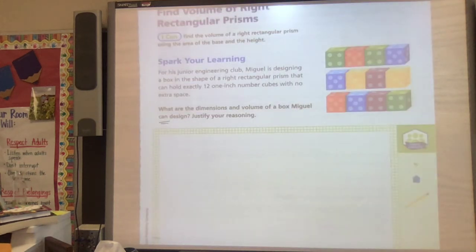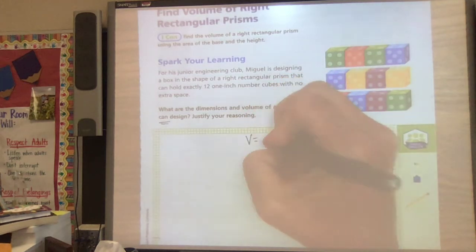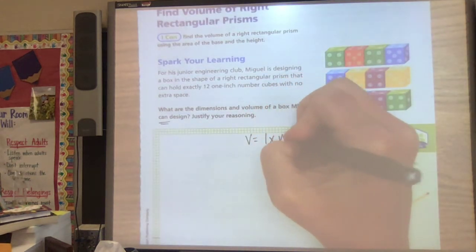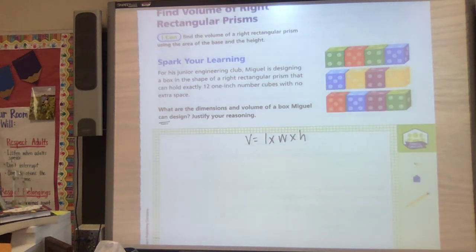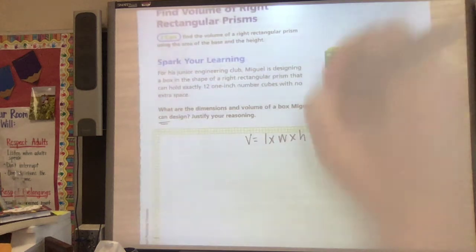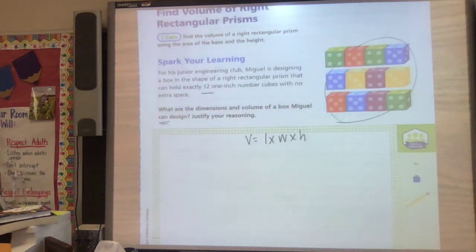So let's think about it. We know that volume is length times width times height. And if we know that, then we need to think what can we do to make it equal 12.